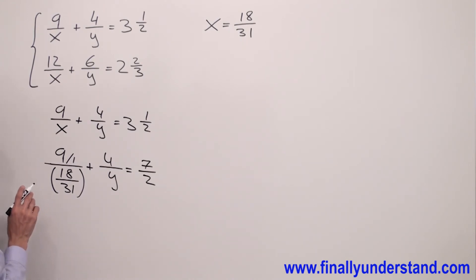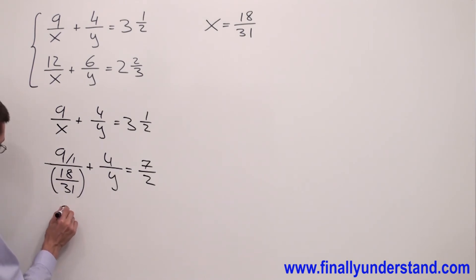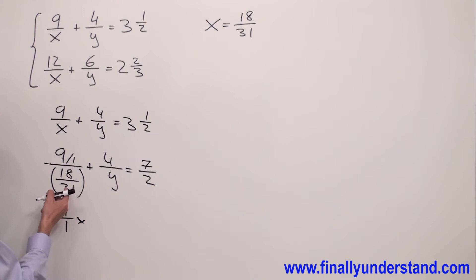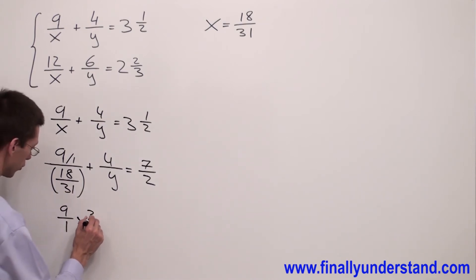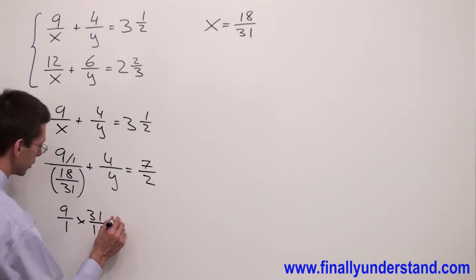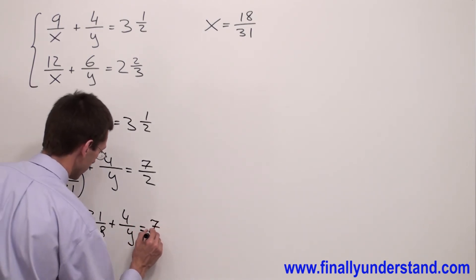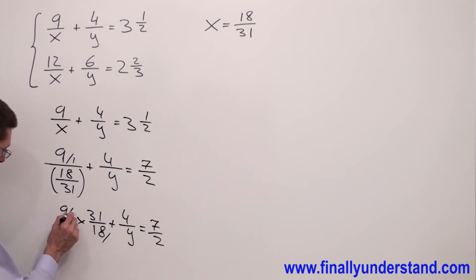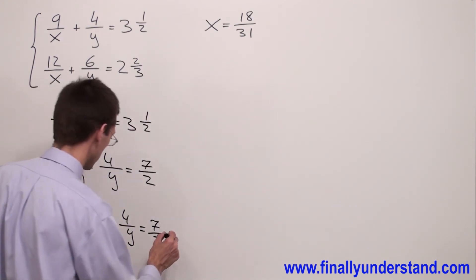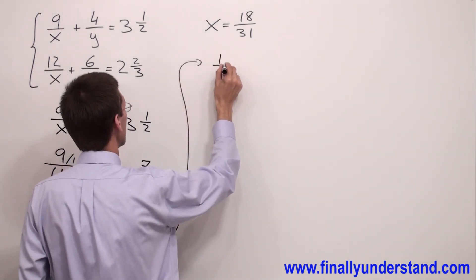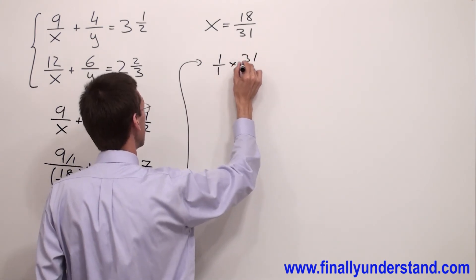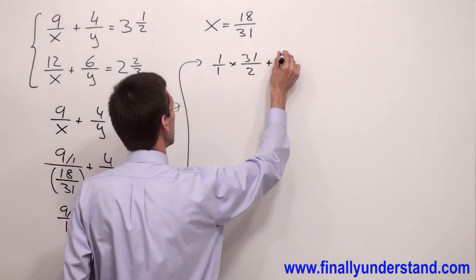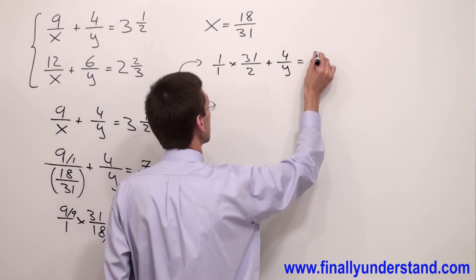When dividing fractions, copy down the first fraction — which is 9 over 1 — change division to multiplication, and flip the second fraction to find its reciprocal. We get 31 over 18 plus 4 over y equals 7 over 2. When multiplying fractions, check if you can reduce. We have 9 and 18, both divisible by 9. So we rewrite as 1 over 1 times 31 over 2, plus 4 over y, equals 7 over 2.